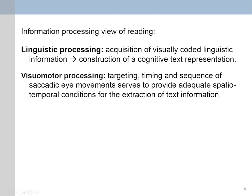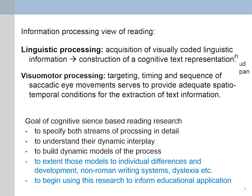Looking at the information processing view of reading: what is happening in reading is there is linguistic processing. You acquire visually coded linguistic information—visual features and letters—that form letter clusters, make up words and sentences, and on the basis of that you construct a cognitive text representation, such as a situation model—a mentally constructed model of the outside world or chain of events as described in the text. At the same time, real reading behavior also includes visual-motor processing. Visual-motor processing is not an add-on; it's part and parcel of reading itself, concerning the targeting, timing, and sequence of saccadic eye movements.